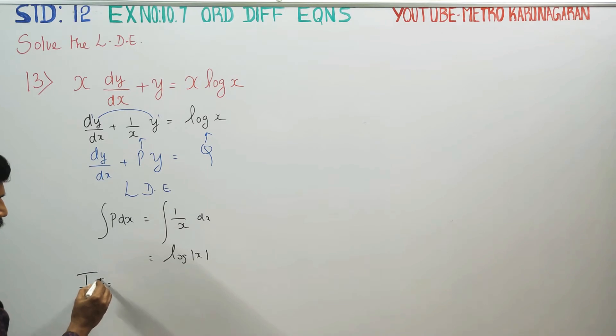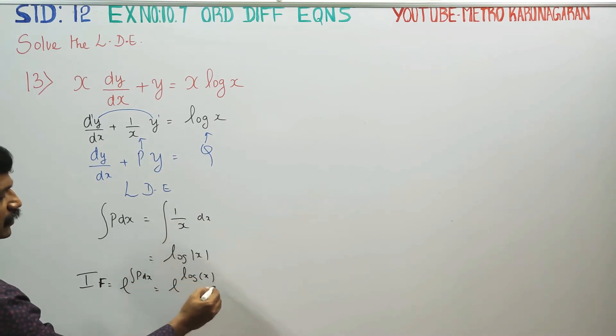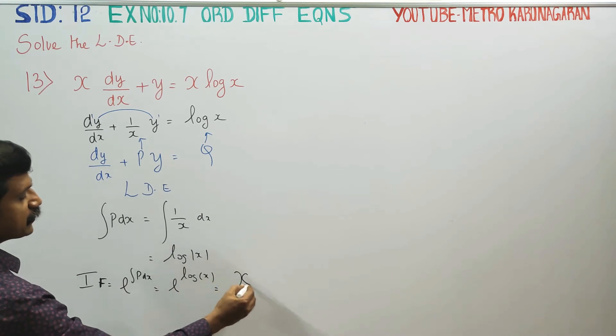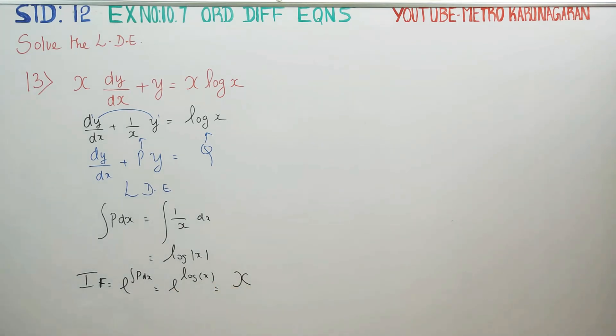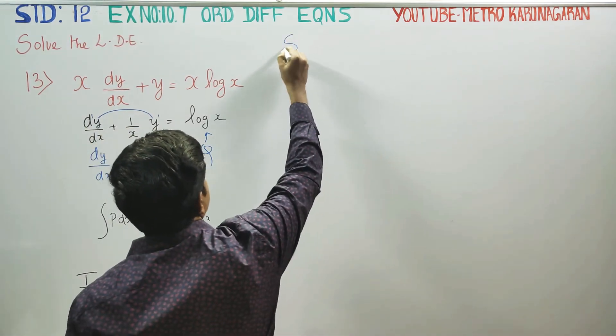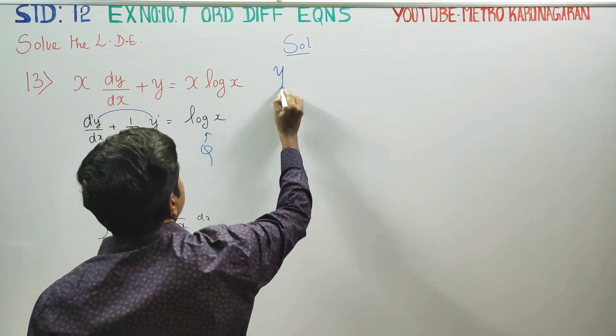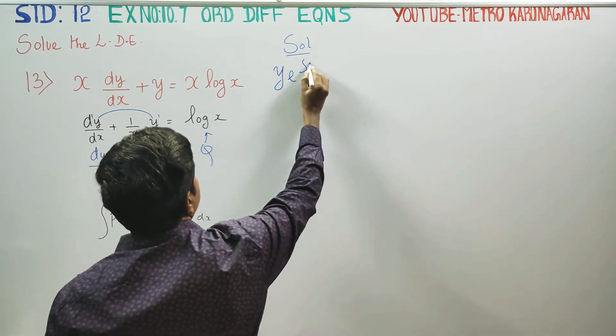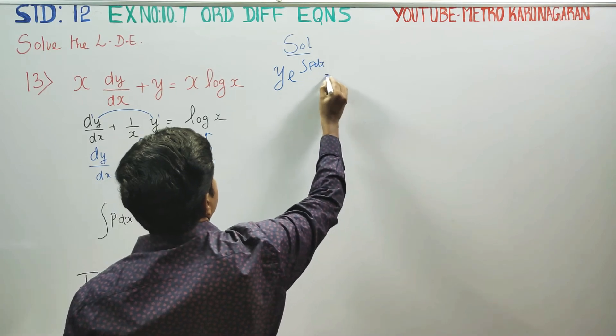Integrating factor is e to the power integral of 1 by x dx, which is e to the power log x. e to the log x equals x, so the integrating factor is x.